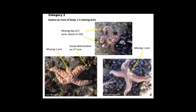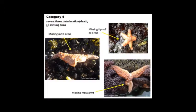In Category 3, lesions appear on most of the body, and parts of or entire limbs will start to fall off. In Category 4, there are several deteriorations to the body. As the body deteriorates further and the tissue becomes soft, the starfish can no longer hold onto water — this is of vital importance for the water vascular system. Without being able to move or hunt, the starfish simply wastes away, and this is how the wasting disease got its name.